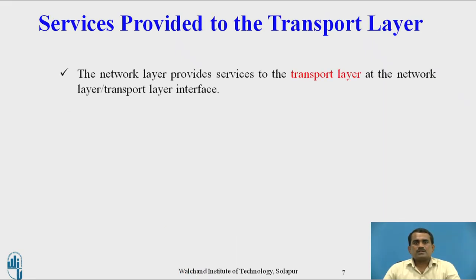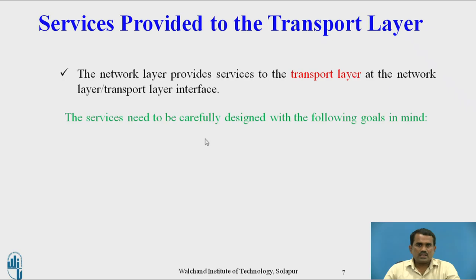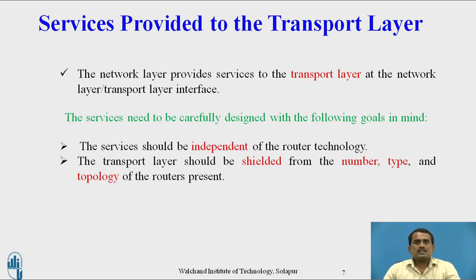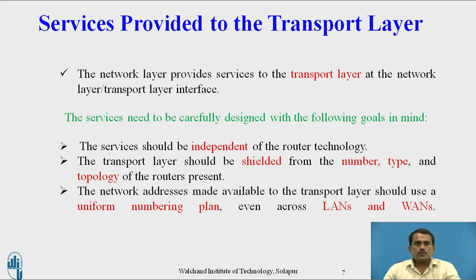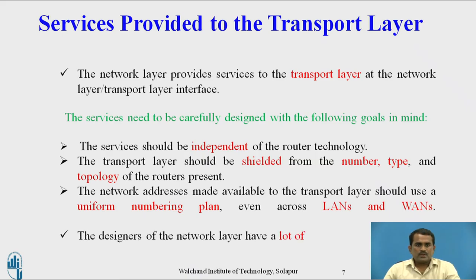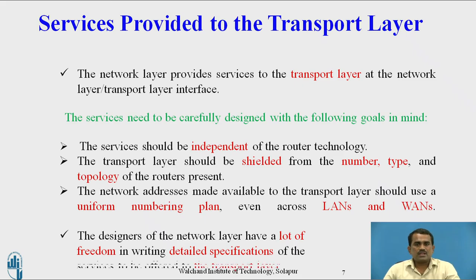The network layer provides services to the transport layer at the transport layer interface. Different services include: the service should be independent of router technology; the transport layer should be shielded from the number, type, and topology of routers present; and network addresses made available to the transport layer should use a uniform numbering plan, even across LAN and WAN.